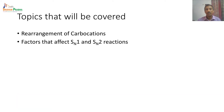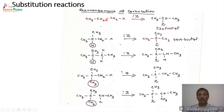The topics we will be studying in this session include Rearrangement of Carbocations and the factors that affect SN1 and SN2 reactions. The rearrangement involves Primary to Secondary, Primary to Tertiary, or Secondary to Tertiary. We will also study the 1-2 shift — either Hydride shift or Alkyl shift.